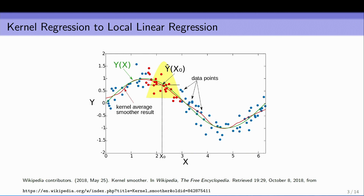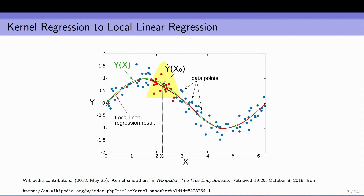Kernel regression works pretty well in the middle, but it suffers from bad boundary bias at the edge. The kernel can tell you if you're close to the test point, but it can't tell you if you're to the right or to the left. So if you're on the boundary, you get consistently biased predictions. But there's a nice fix: instead of fitting a local mean, you fit a local line, which fixes that boundary bias problem.